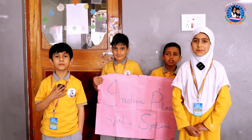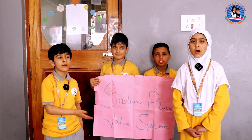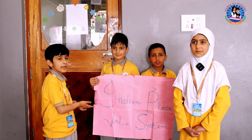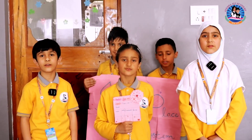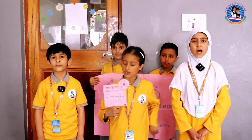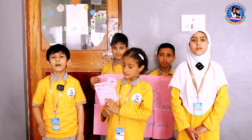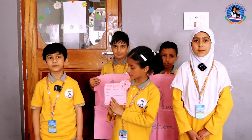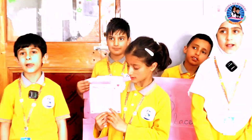Hello dear friends, today me, Mohtashim and my sister Zohar will tell you about an Indian place value system. In the Indian place value system, there are four periods: one's period, thousand's period, lakh's period and crore's period.